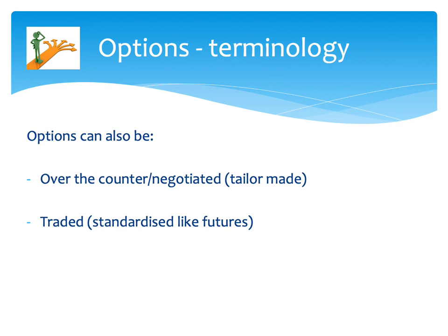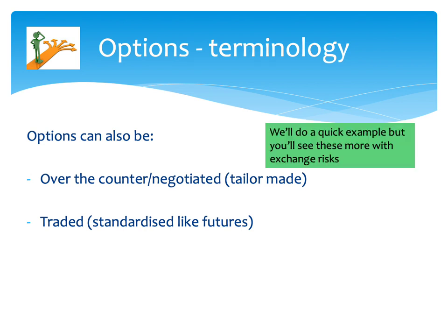There are a couple of types of options you may come across. First are over-the-counter or negotiated options, which are tailor-made for individual transactions. They're much less common in the exam, especially outside of exchange risks. The main ones you're going to come across are traded options — these are basically options on futures, very similar to the futures you've already seen, just with a little twist.